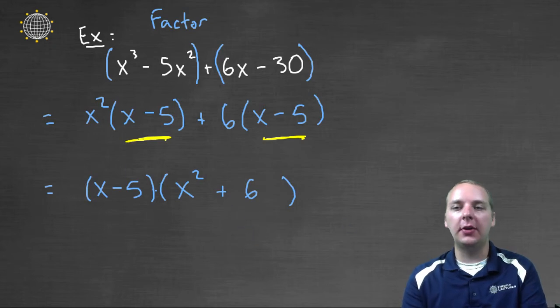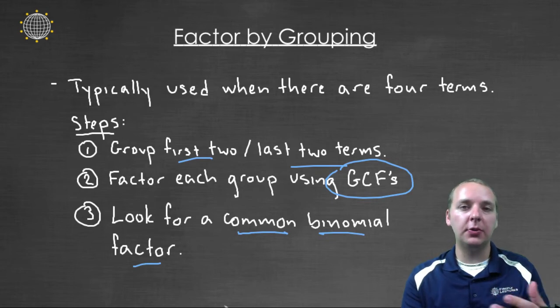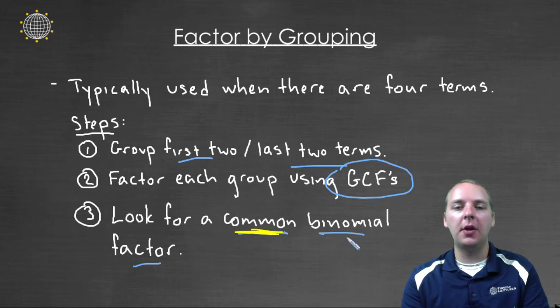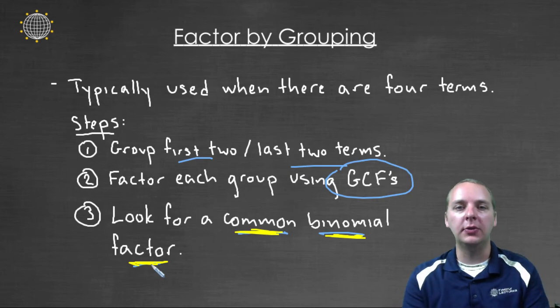That's how we do factor by grouping. We group the first two terms and the last two terms. You factor each group using greatest common factors. And then if it's possible to factor by grouping, those two groups should have some common binomial factor that you can factor in, and factor the whole entire polynomial.